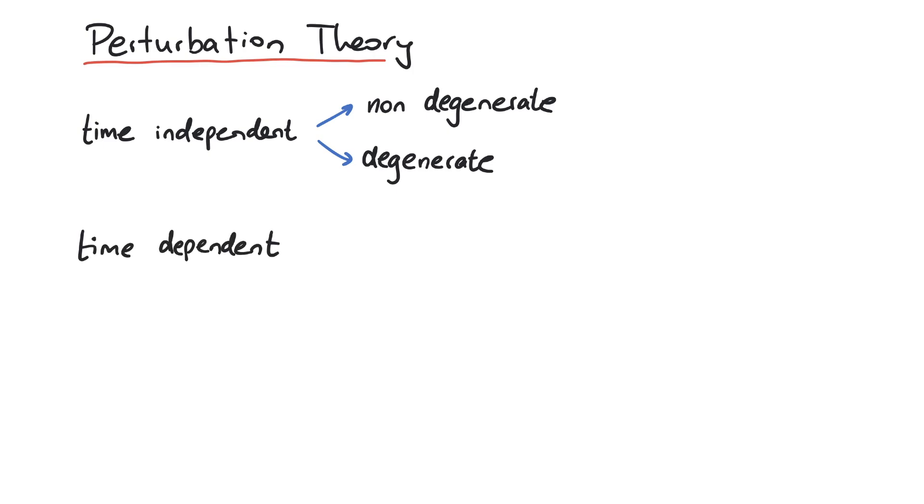In this video, we will show you three different types of perturbation theory. First, we look at time-independent perturbation theory. There are two cases, whether we have degeneracy or not. Later on, we cover time-dependent perturbation theory.